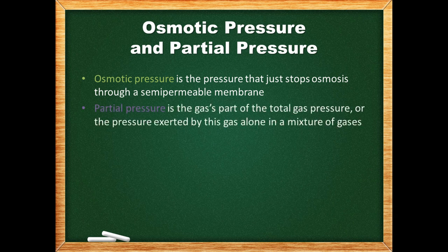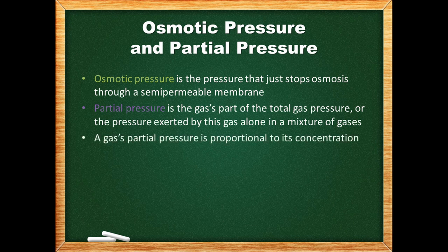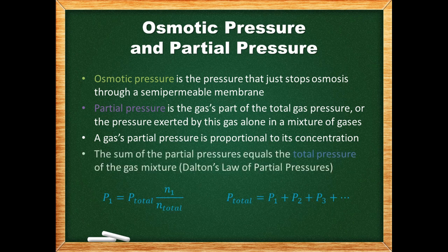Partial pressure is the gas's part of the total gas pressure, or the pressure exerted by that gas alone in a mixture of gases. A gas's partial pressure is proportional to its concentration. Dalton's law of partial pressures states that the sum of all partial pressures of a gas mixture equals the total pressure. The partial pressure of a gas is proportional to its mole fraction — multiplying the total pressure by the moles of one gas divided by the total moles of gas equals that gas's partial pressure.